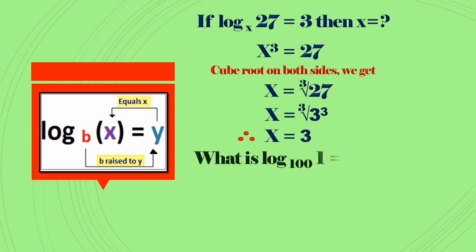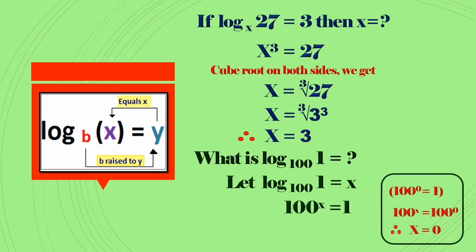See another example: what is log₁₀₀(1)? Let us say log₁₀₀(1) is equal to x. We can rewrite it as 100^x = 1. If you remember from the exponent rules, anything to the 0th power is equal to 1. That means 100^0 = 1, 2^0 = 1, 7^0 = 1, 15^0 = 1, likewise.